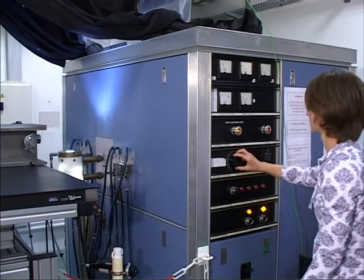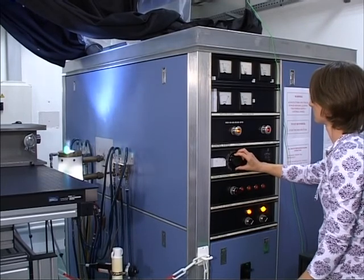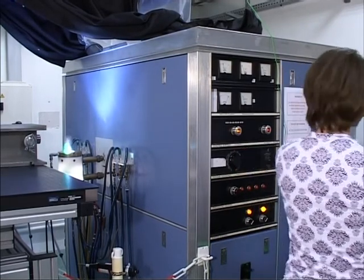Once a steady plasma is obtained, the Tesla coil is removed, and the argon flow is gradually switched to airflow.